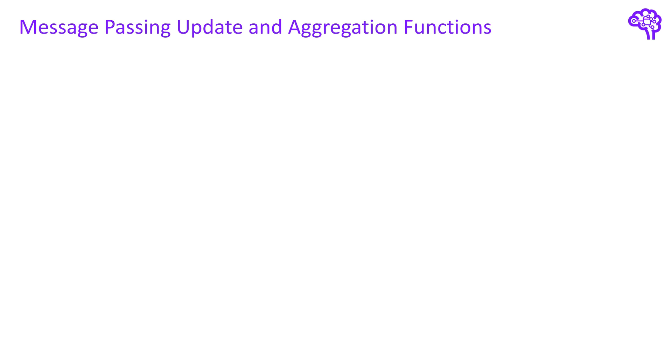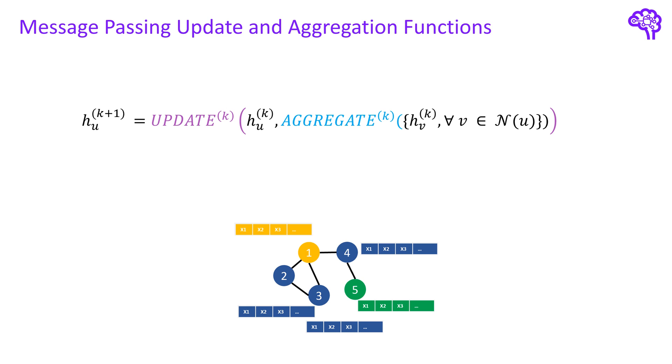Let's formulate the operations in the message passing layers more mathematically. The state update for a node U is mainly performed using the two already introduced operations aggregate and update. Aggregate uses the states of all direct neighbors V of a node U and aggregates them in a specific way. Then the update operation uses the current state in time step K and combines it with the aggregated neighbor states. If we think of our previous example our node U is the yellow node and its neighbors are the three blue nodes. We use their states in time step K and combine them with the yellow state to get a new embedding for the yellow node.